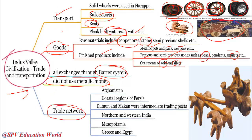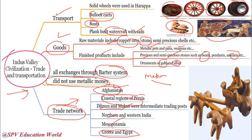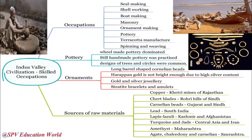Regarding trade networks, they traded most heavily with Afghanistan and with the coastal regions of Persia (modern-day Iran). Dilmun and Magan served as intermediate trade posts while trading with Mesopotamia. They also traded with northern and western India, Mesopotamia, Greece, and Egypt. Terracotta figurines of bullock carts and riders were found in the civilization, reflecting how childhood toys depicted everyday life.